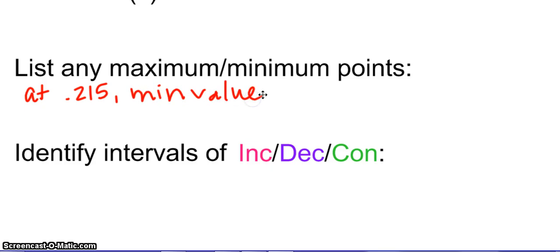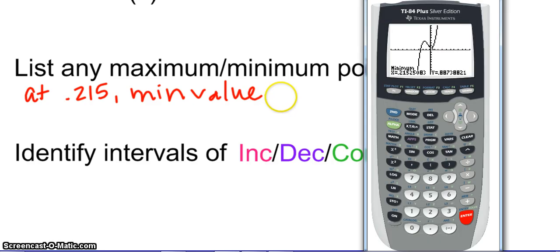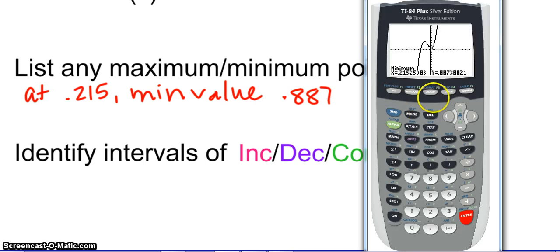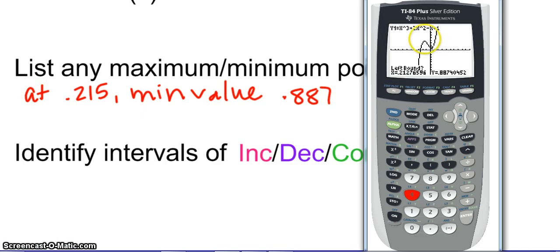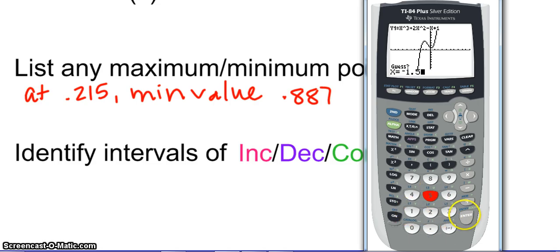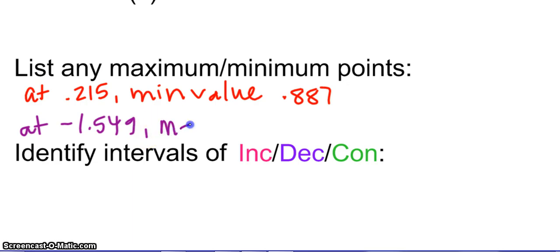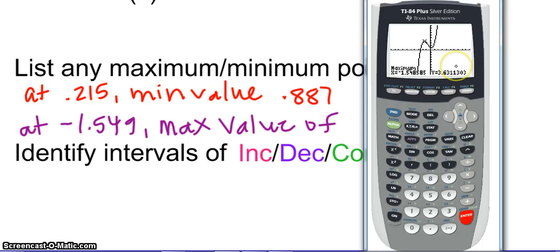And the minimum value is approximately 0.887. So now if I go back — second calc — this time we're going to look for a maximum. It looks like it's at about negative one and a half, so we'll go negative three on the left and zero on the right, and guess negative 1.5. That happens at negative 1.549. And the max value itself — looking at the y, we're talking about the range — is 3.63.